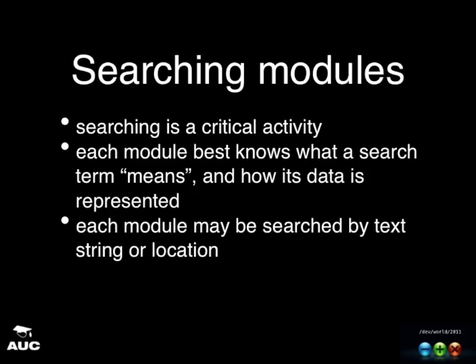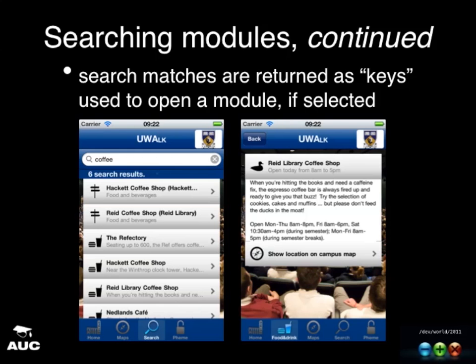Searching is core to most modules. You might ask the bus timetable module when the next 102 is coming, or use the word 'coffee' to describe venues. All modules know how to search themselves and we iterate through all of them. We have an associate professor called Beer and also a tavern — they both pop up when you search. You can also search by location by holding your finger down on the map, which highlights nearby venues, then click through to relevant modules.